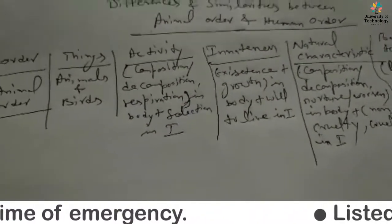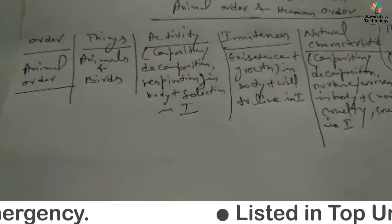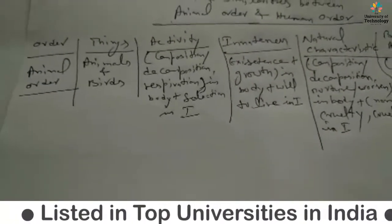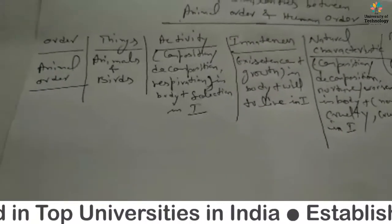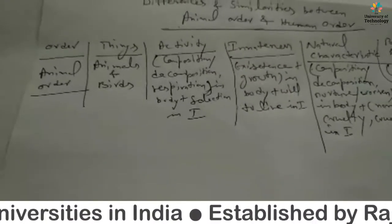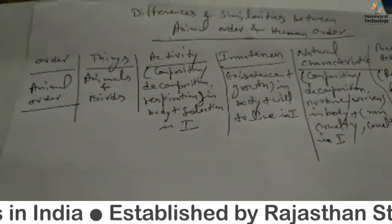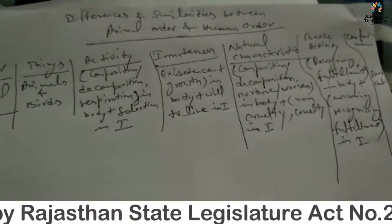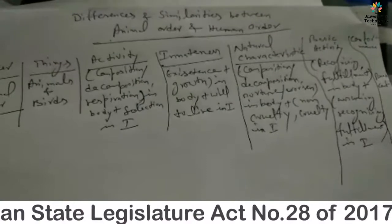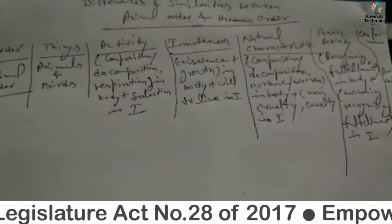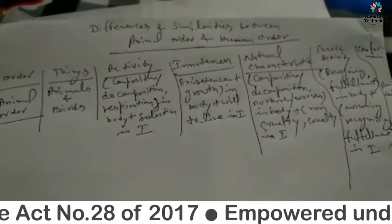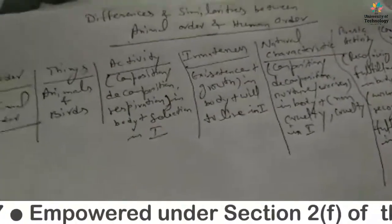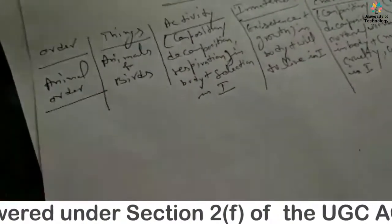For natural characteristics in animal order: composition, decomposition, nurture in body, plus non-cruelty or cruelty in I. For basic activity: recognizing and fulfillment in I. And for conformance, it is breed conformance.